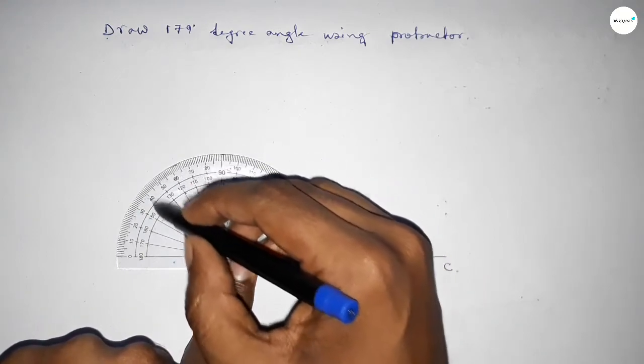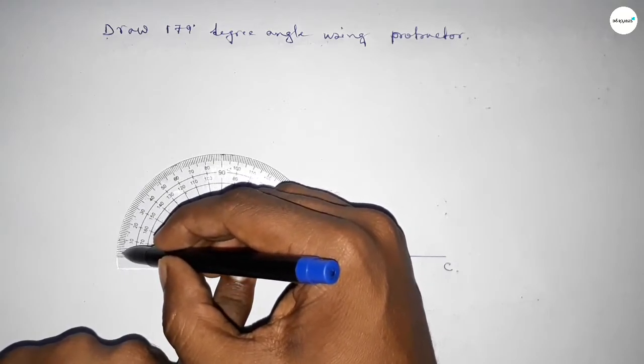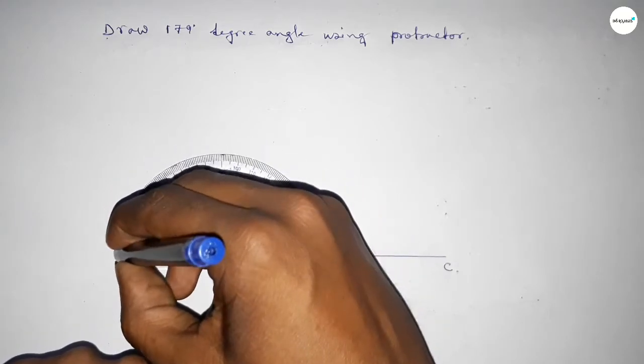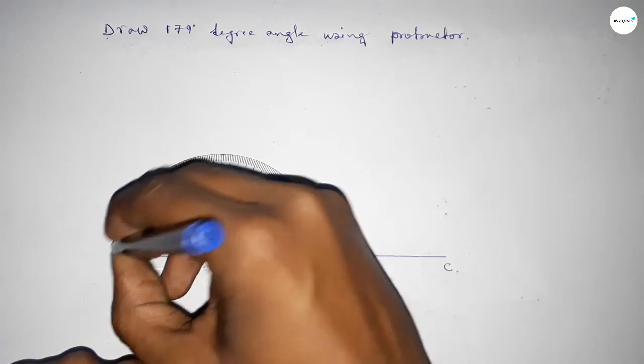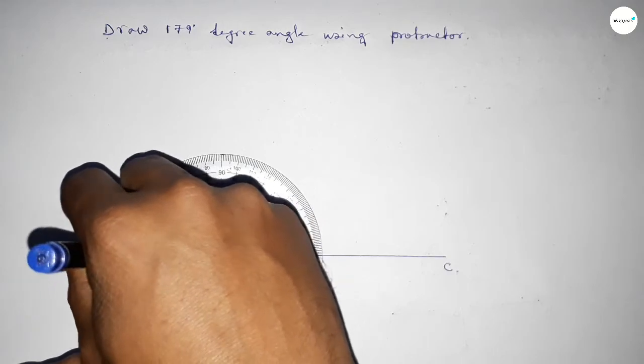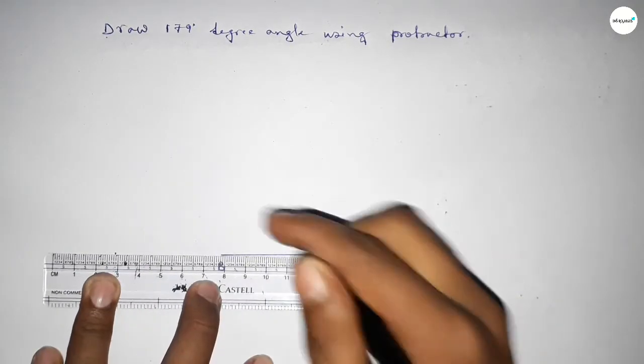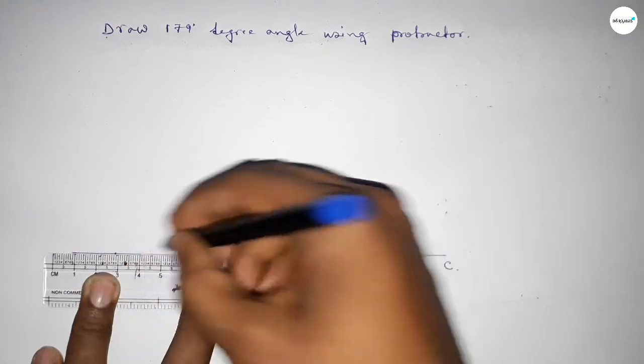90, 100, 110, 120, 130, 140, 150, 160, 170, 175, 176, 177, 178, and this is 179. So this is 179 degrees, or if we subtract 1 degree from 180, then we get 179 degrees. Now joining this side...